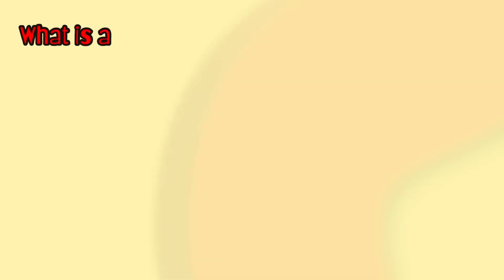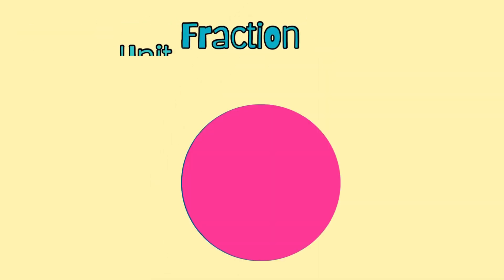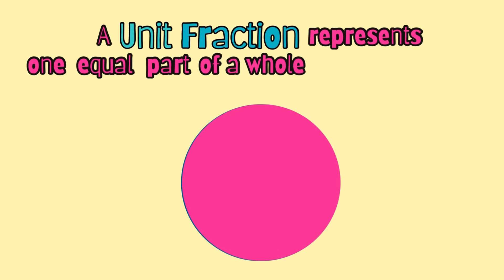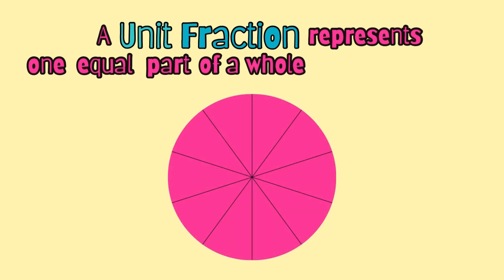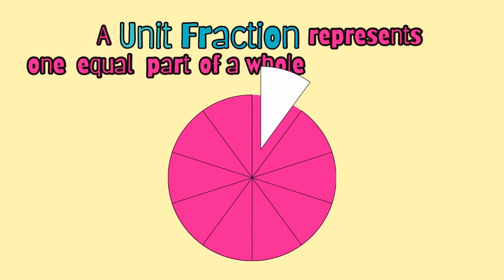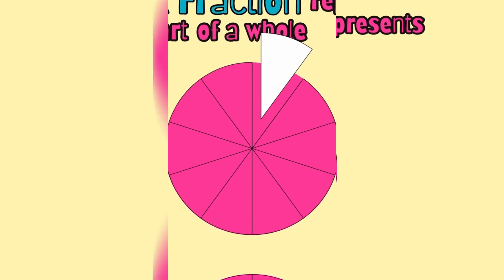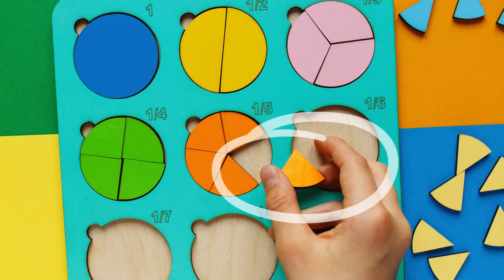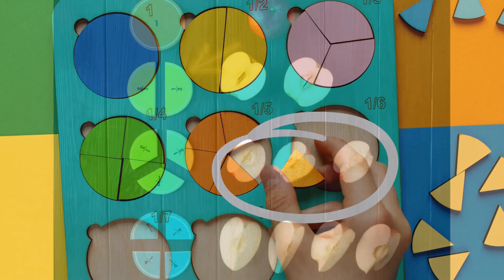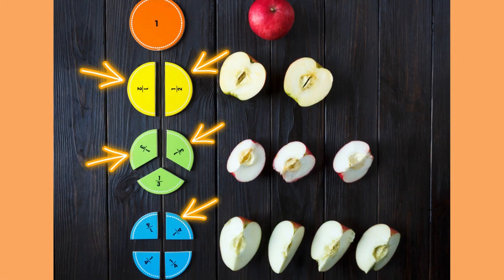What is a unit fraction? A unit fraction represents one equal part of a whole, like each of these little pieces we have in here. When we count them, they represent a fraction. Each of the slices of this pizza represent a unit fraction. These little pieces are unit fractions. Each of these pieces represent a unit fraction.